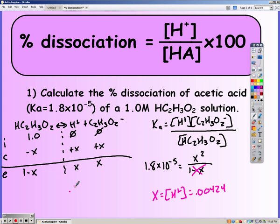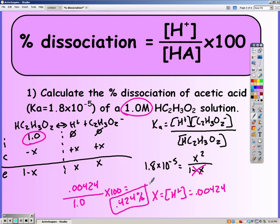So to find my percent dissociation, I'm going to plug it into the equation on top. So my H+ over my original concentration, which was 1 molarity, times 100. So notice it's exactly the same as when we were calculating the pH of a weak acid, except once you get your X, you plug it into the percent dissociation equation instead of the pH equation.